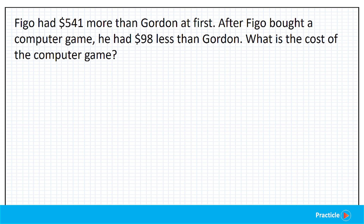Now that we have a better idea of how to think of this math question in terms of three parts, we are going to look at this part by part and see how to go about solving the question. So firstly, we'll look at the before situation and draw the model for that to help us see what's going on better. So what do we have? Figo had $541 more than Gordon at first. So how many people do we have here?